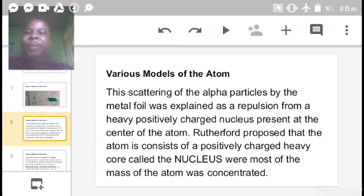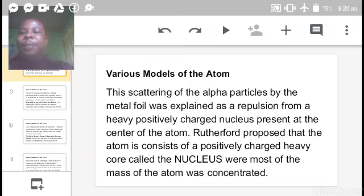This scattering of the alpha particles by the metal foil was explained as a repulsion from a heavy positively charged nucleus present at the center of the atom. Rutherford proposed that the atom consists of a positively charged heavy core called the nucleus, where most of the mass of the atom was concentrated. The scattering brought the notion that atom consists of a positively charged, heavy central particle called the nucleus.